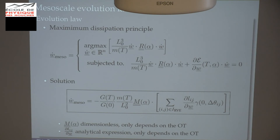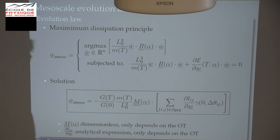The result is the evolution law: the variation of the weights as a function of the surface energy at zero Kelvin and the variation of length when you vary the weights. This gradient is computed analytically from the definition of the oriented tessellation. All the temperature dependence is contained here, and the dimensionless tensor depends only on the oriented tessellation parameters. There is also a size effect — L0, the only physical length in the system, appears here, so the speed of evolution depends on the real size of the grains.